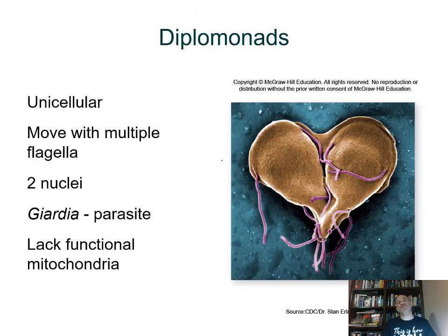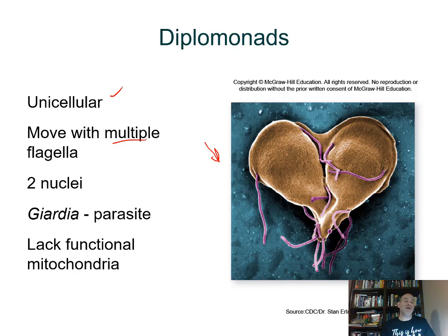Looking at the first group, the diplomonads: they're unicellular and have multiple flagella, as seen in this scanning electron micrograph — they're color-enhanced so you can see the several flagella. In light microscopy, you would actually see two nuclei, one here and one here. What's characteristic of diplomonads — and one way to remember it is 'diplo' — is that they have two nuclei.